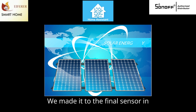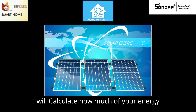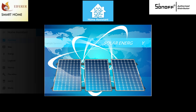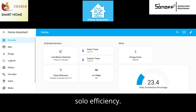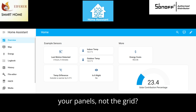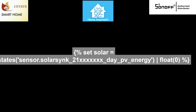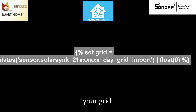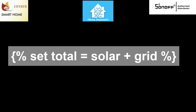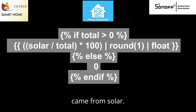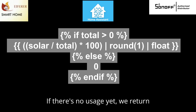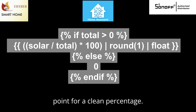We've made it to the final sensor. In this one we'll calculate how much of your energy usage today came from solar — a great metric for tracking your solar efficiency. You'll get a percentage value showing how much of your daily energy came from your panels, not the grid. First we get your solar energy production in kilowatt hours, then we get how much energy came from the grid. We add the two together to get your total usage. Finally we calculate the percentage that came from solar. If there's no usage yet, we return zero; otherwise we round it to one decimal point for a clean percentage.